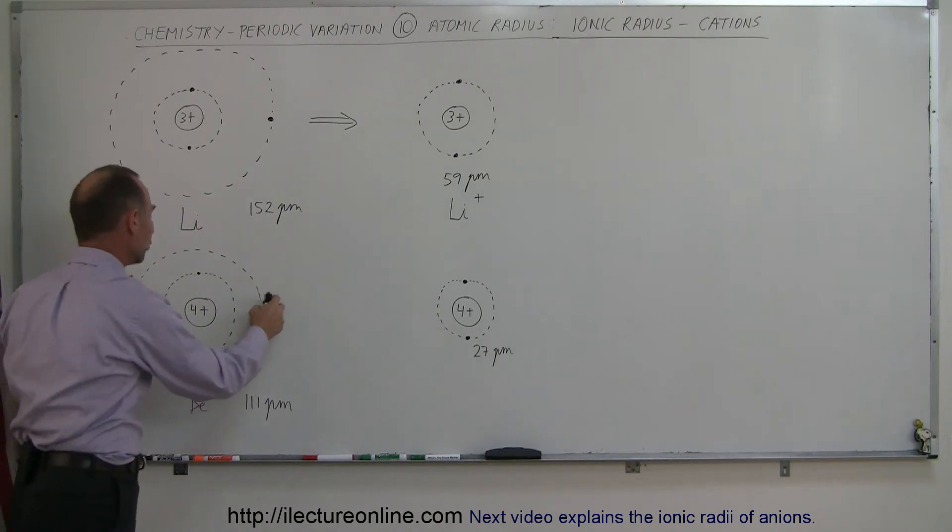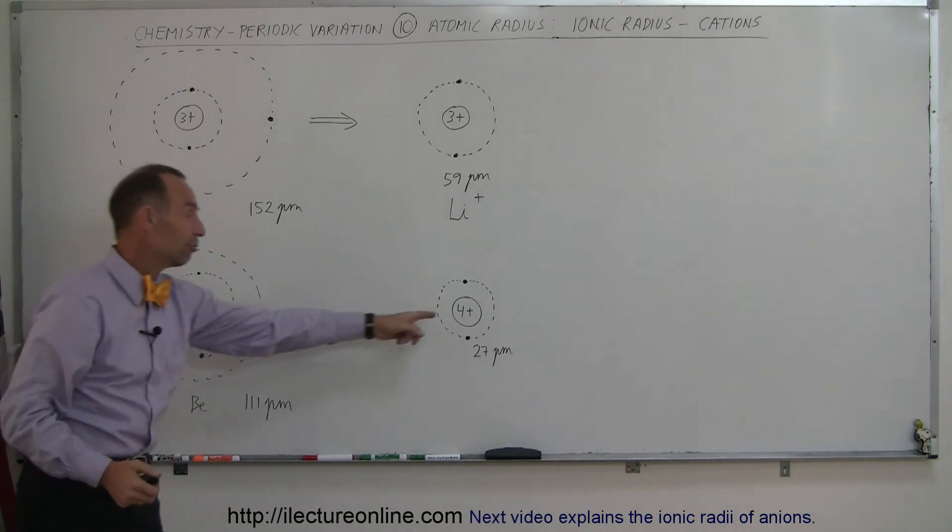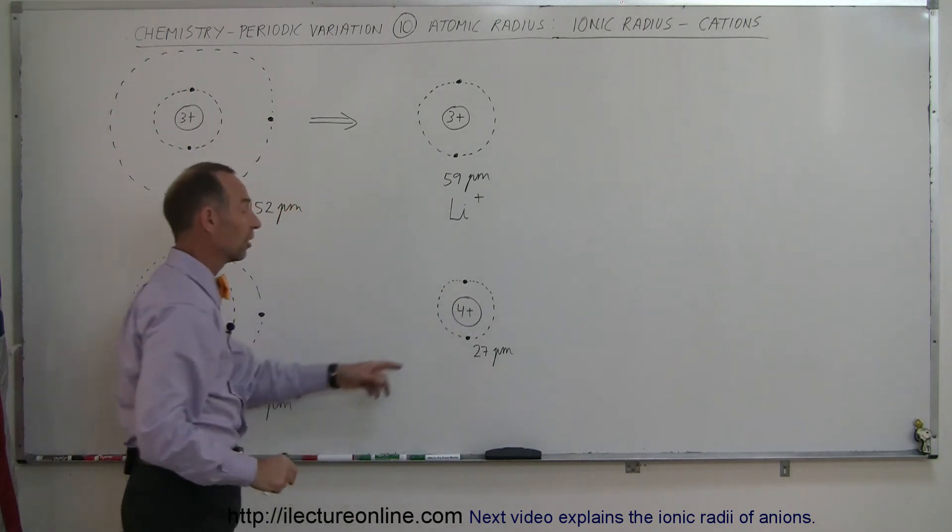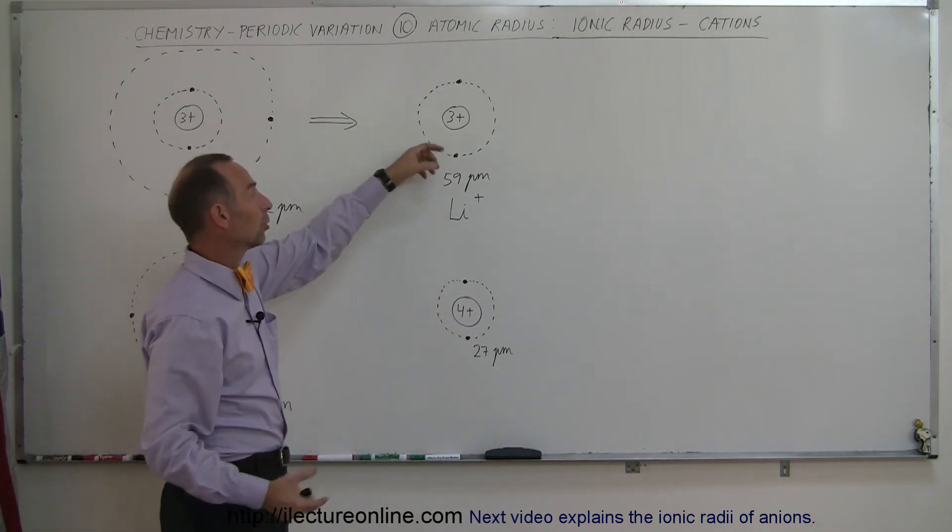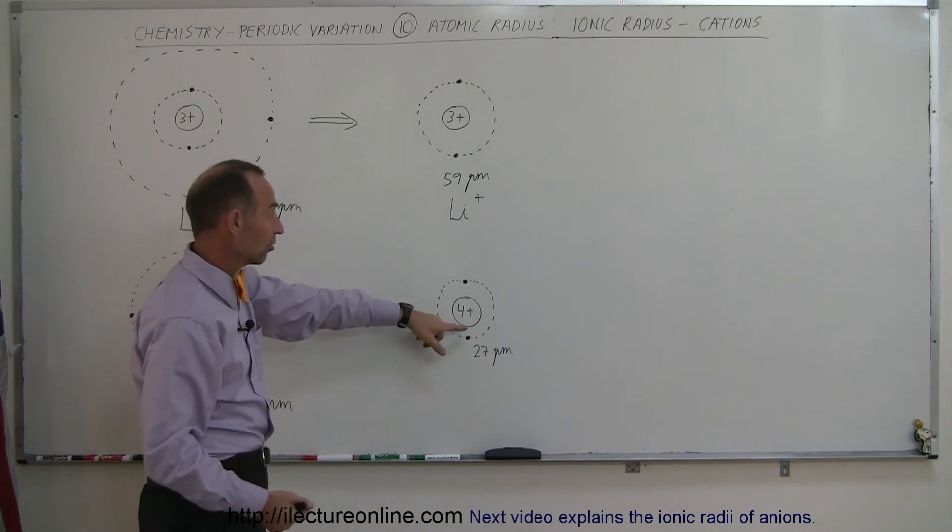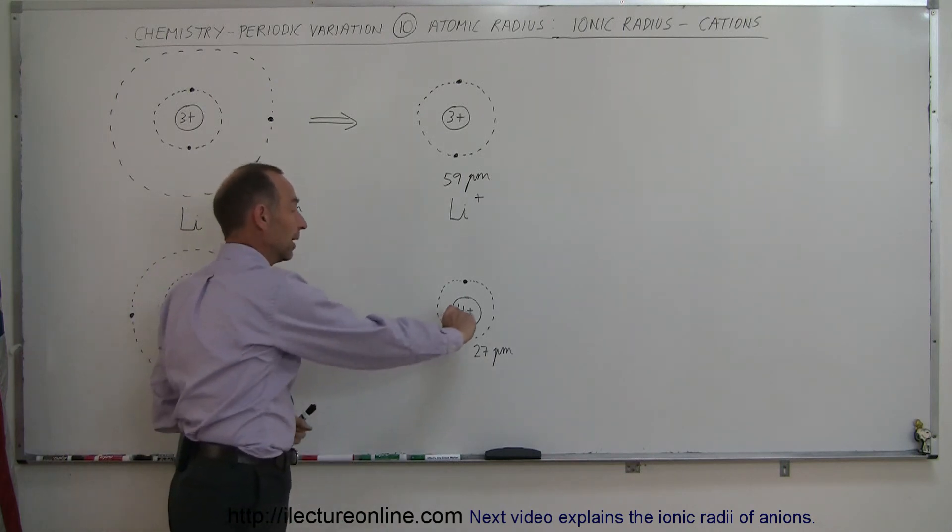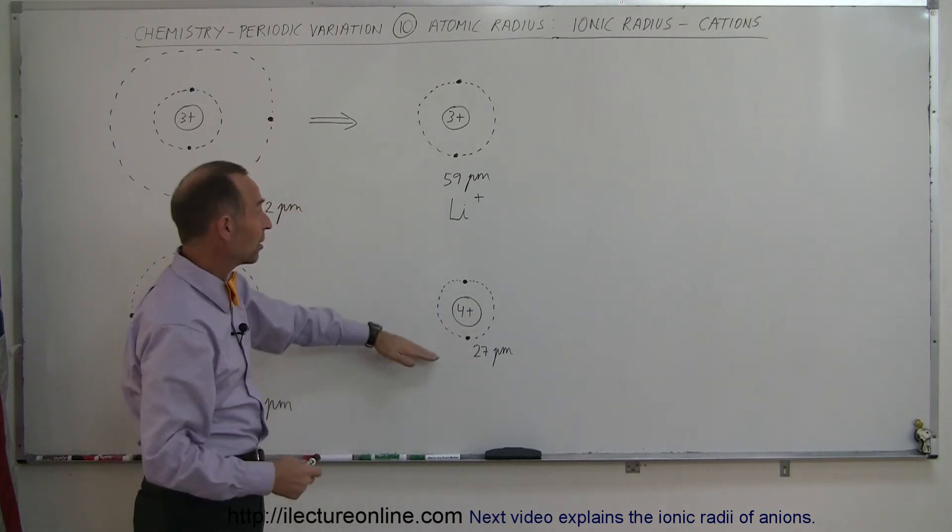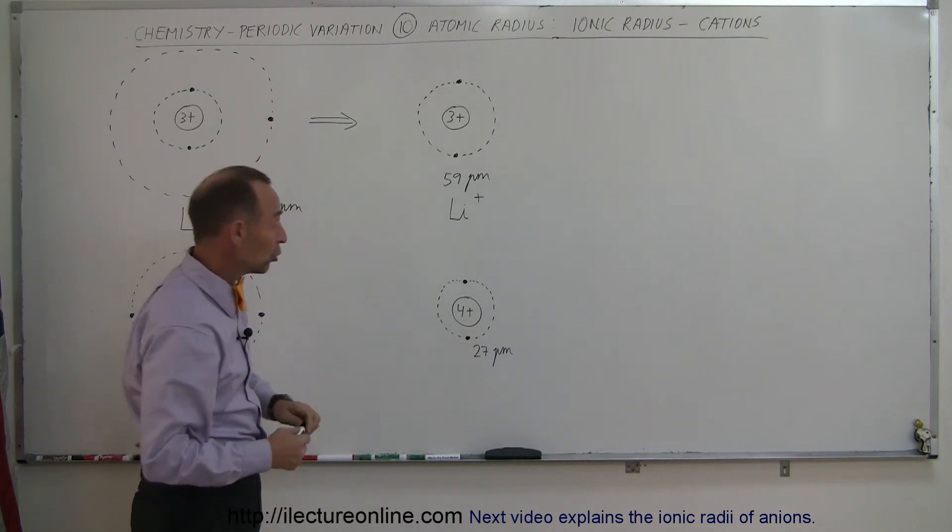But what happens when you remove both of those electrons? Now you have four positive charges in the nucleus pulling on just these two electrons, and so you can see that they get pulled a lot more strongly by this additional positive charge, pulling them into such a point that the radius of that ion is now 27 picometers instead of 59. So it makes a huge difference.